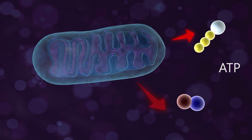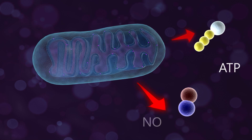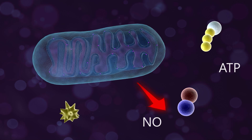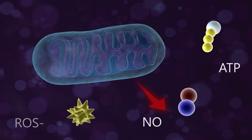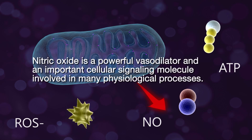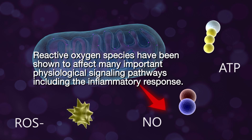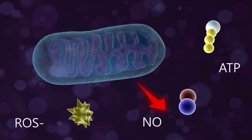In addition to ATP, laser stimulation also produces free nitric oxide and reactive oxygen species. Nitric oxide is a powerful vasodilator and an important cellular signaling molecule involved in many physiological processes. Reactive oxygen species have been shown to affect many important physiological signaling pathways, including the inflammatory response.